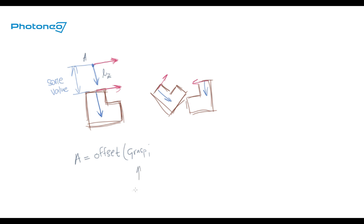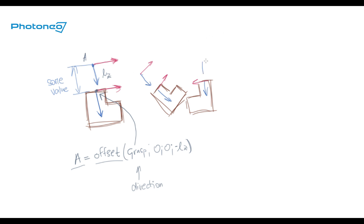So the approach is offset with 0X, 0Y, and negative length-of-Z, because we go in the opposite direction. We created a new waypoint as an offset of the grasp waypoint with this XYZ translation. Similarly, we would create another approach for the next part, which looks exactly the same but in a different rotation because that part has a different rotation. All these workpieces share the same offset in the direction and rotation of the workpiece.